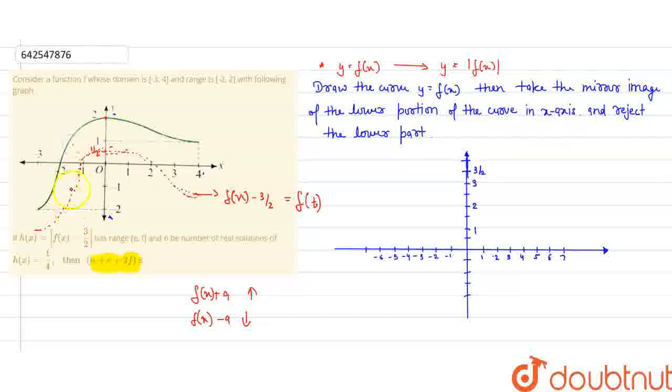That means we will take the mirror image of this lower portion. This goes like this. This is the same. And we will eliminate this portion. So in our graph, it will go like this.